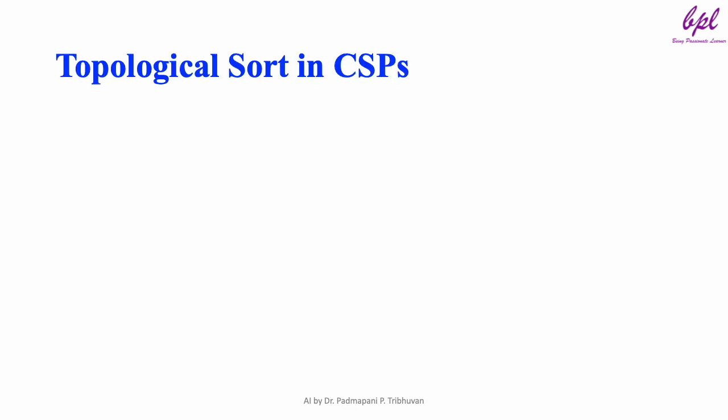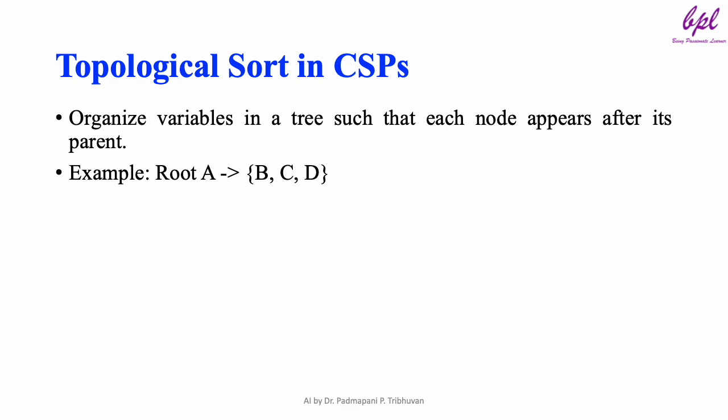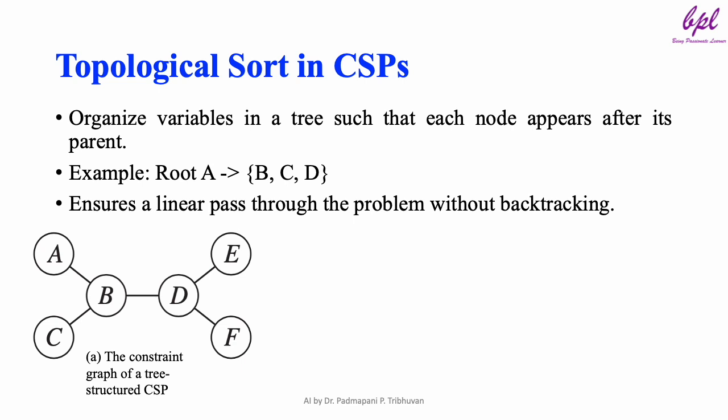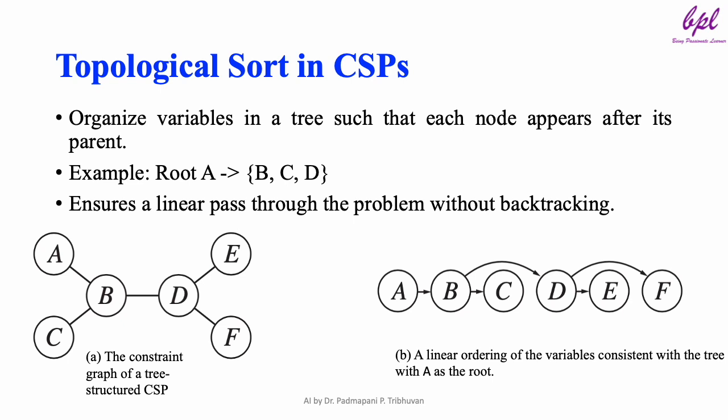Now let's see what is topological sort. In a topological sort, we order variables in a way that each variable follows its parent in a tree-structured CSP. For example, if A is the root, we process B, C, and D after A. This ordering allows us to move through variables without having to backtrack, as consistency is maintained along the way. Here the diagram shows the constraint graph of tree-structured CSPs and a linear ordering of variables consistent with the tree.